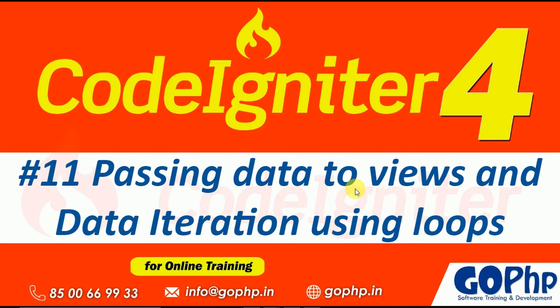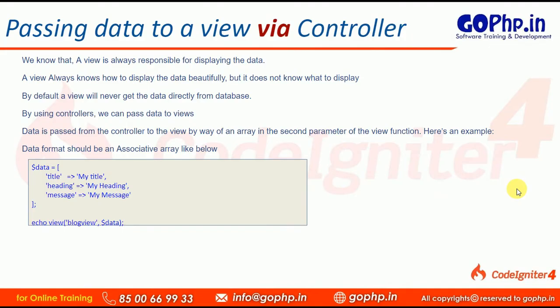As per our MVC architecture, we know that a view is responsible for displaying the data, and the model is responsible for bringing the data from the database. How a view and model communicate with each other with the help of a controller — that's already been covered in our MVC architecture diagram. Now we are going to see the same in action.